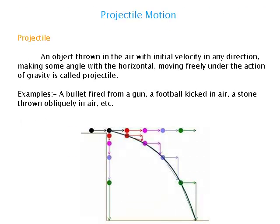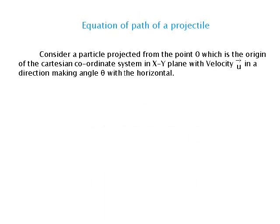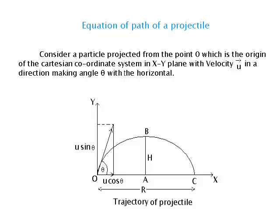Projectile Motion. A projectile is an object thrown in the air with an initial velocity in any direction making some angle with the horizontal, moving freely under the action of gravity. Examples include a bullet fired from a gun, a football kicked in the air, and a stone thrown obliquely in the air. Consider a particle projected from the origin of the Cartesian coordinate system in the xy-plane with velocity u at an angle theta with the horizontal.